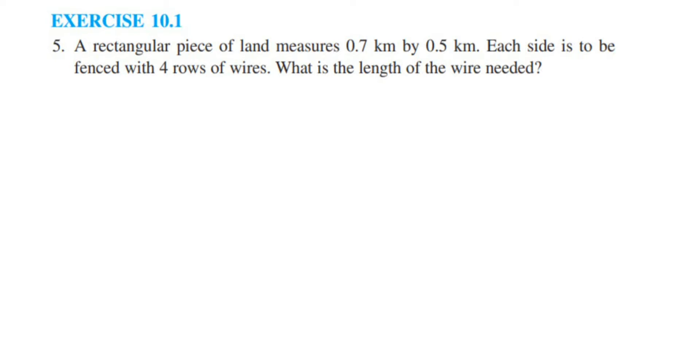Hey everyone, here is a question from exercise 10.1, 5th question. Chapter is Mensuration of Classics. Question is: a rectangular piece of land measures 0.7 km by 0.5 km. Each side is to be fenced with 4 rows of wire. What is the length of the wire needed?